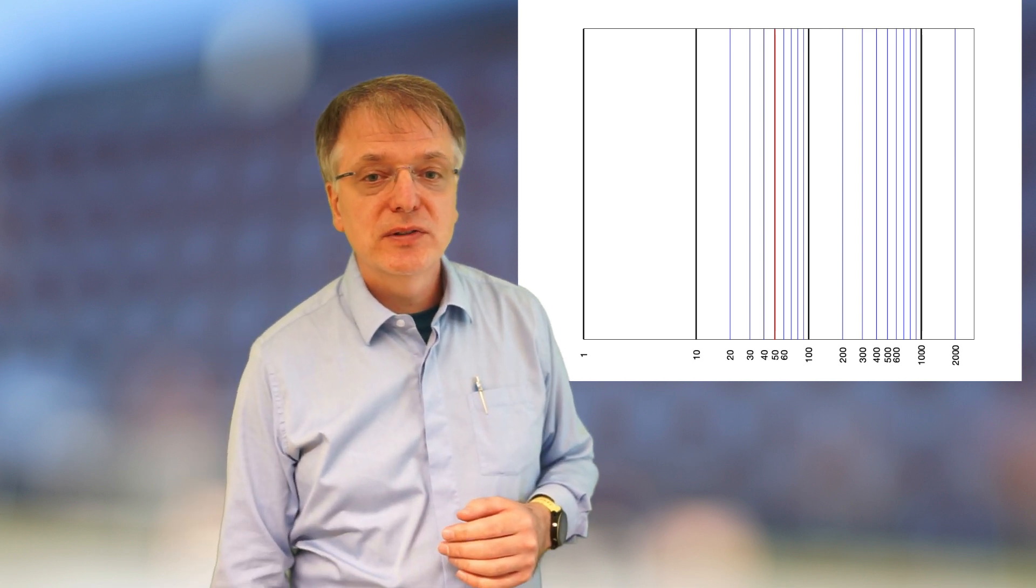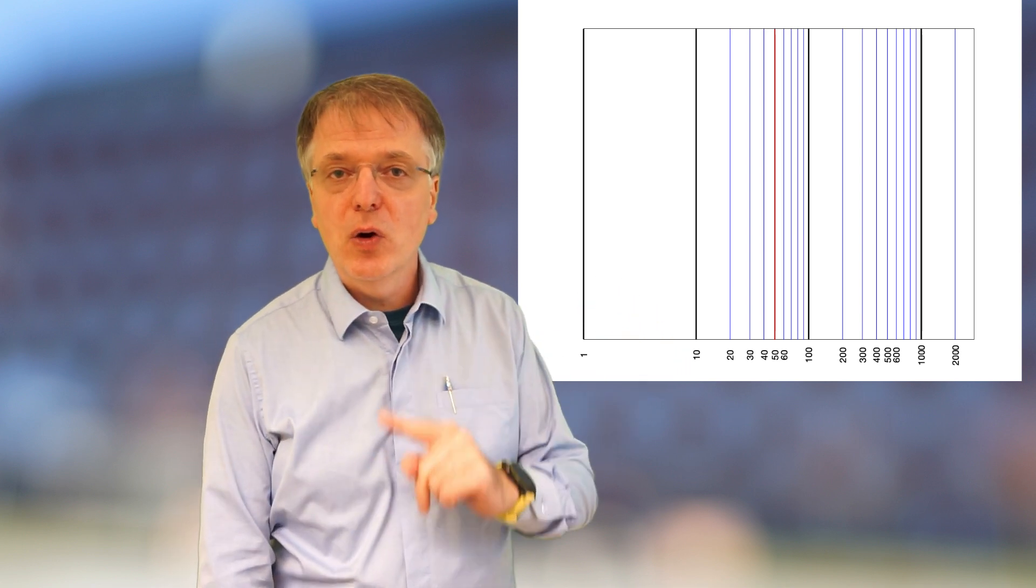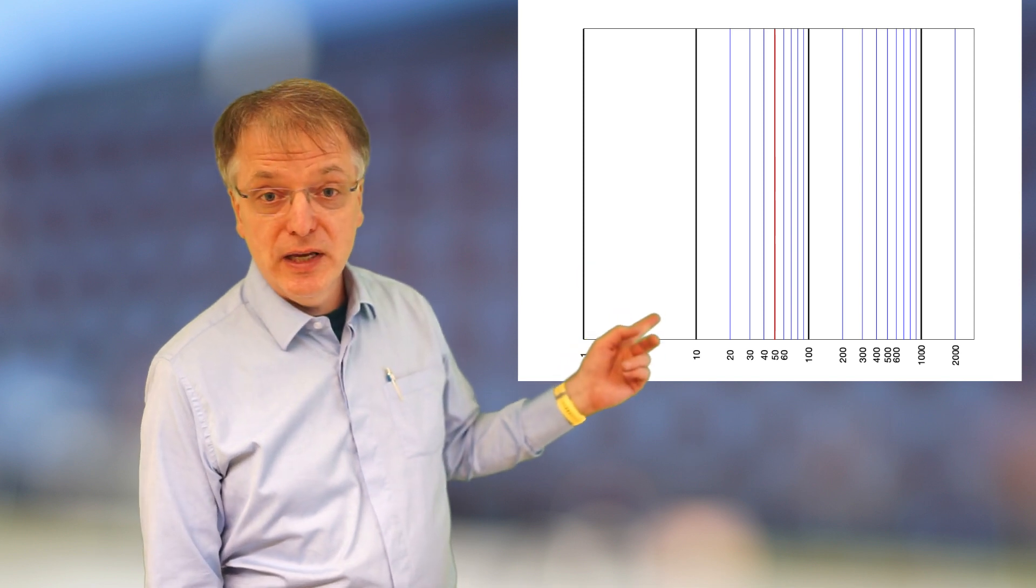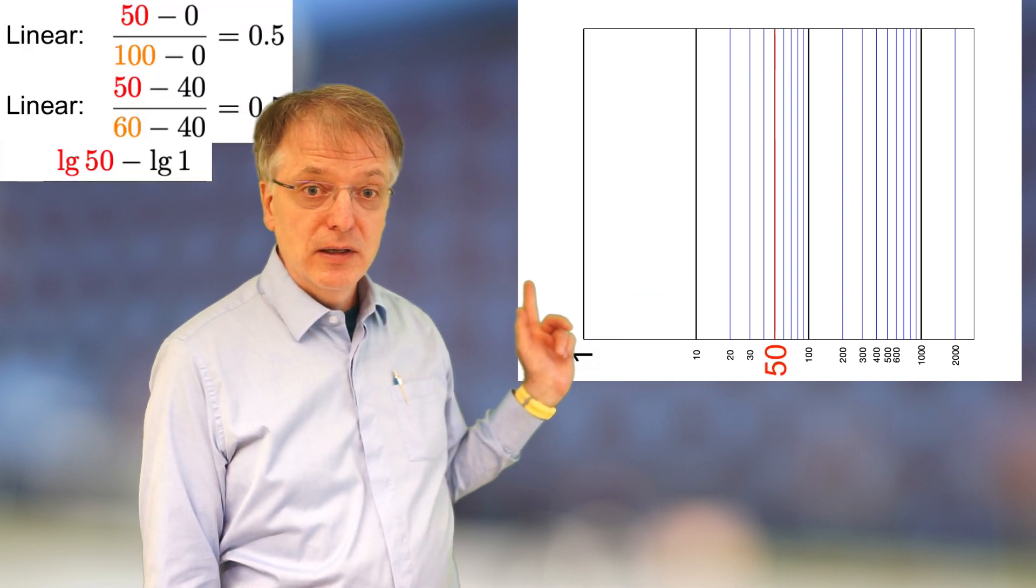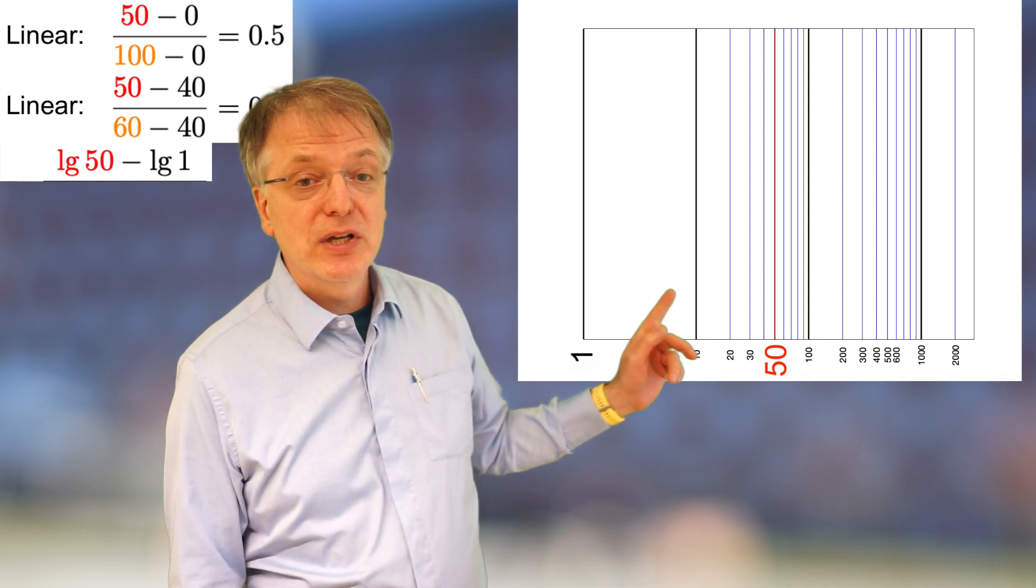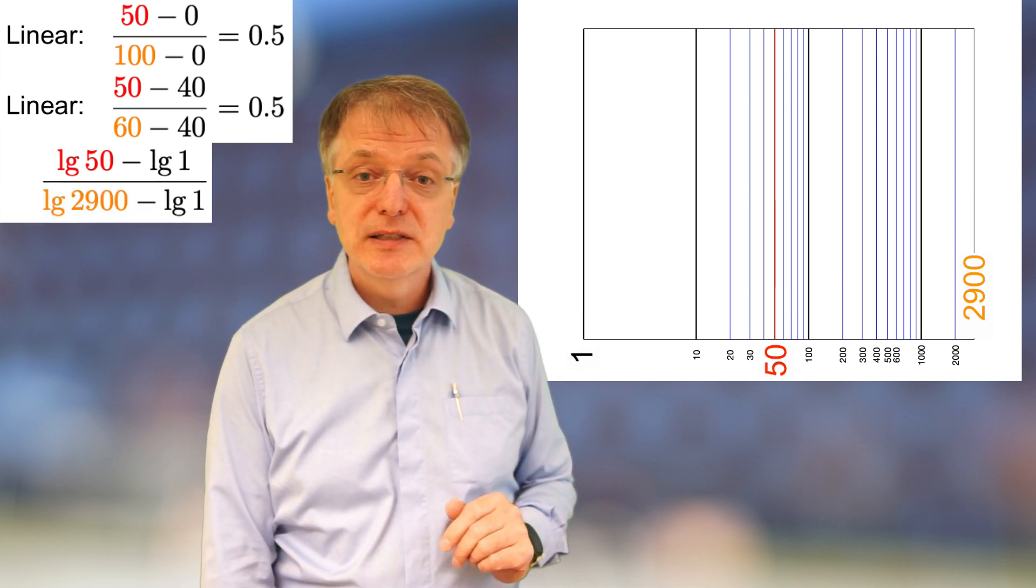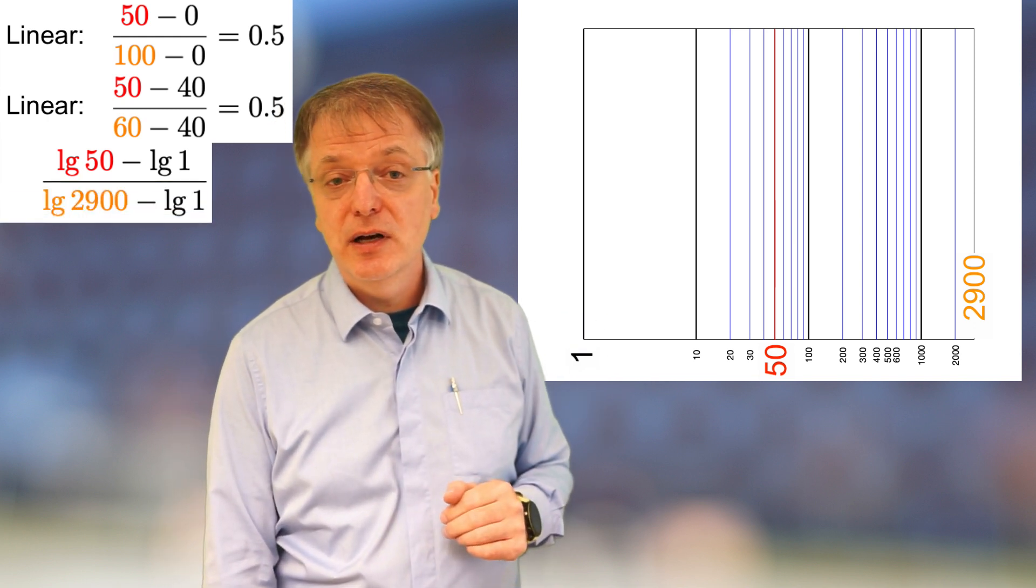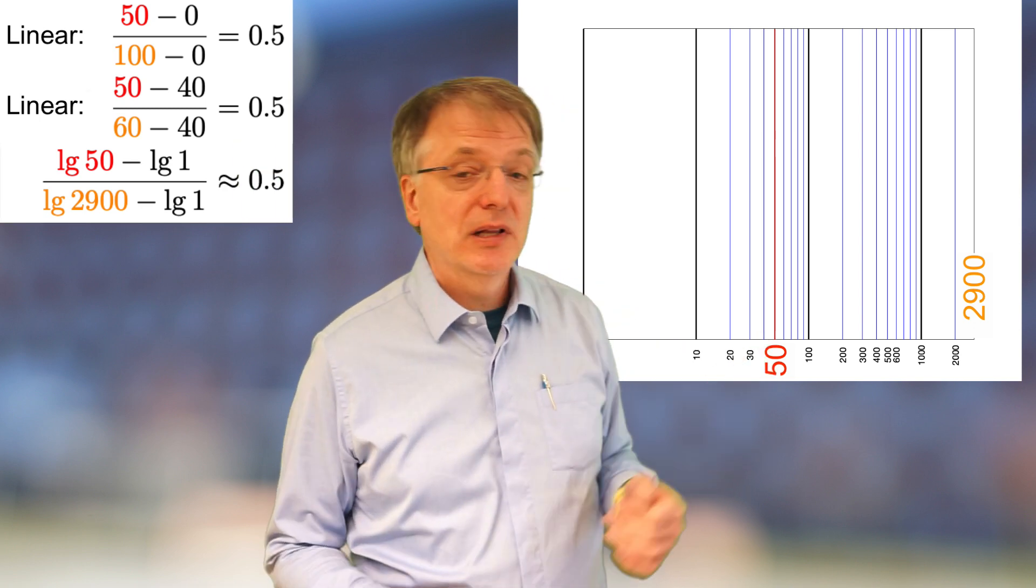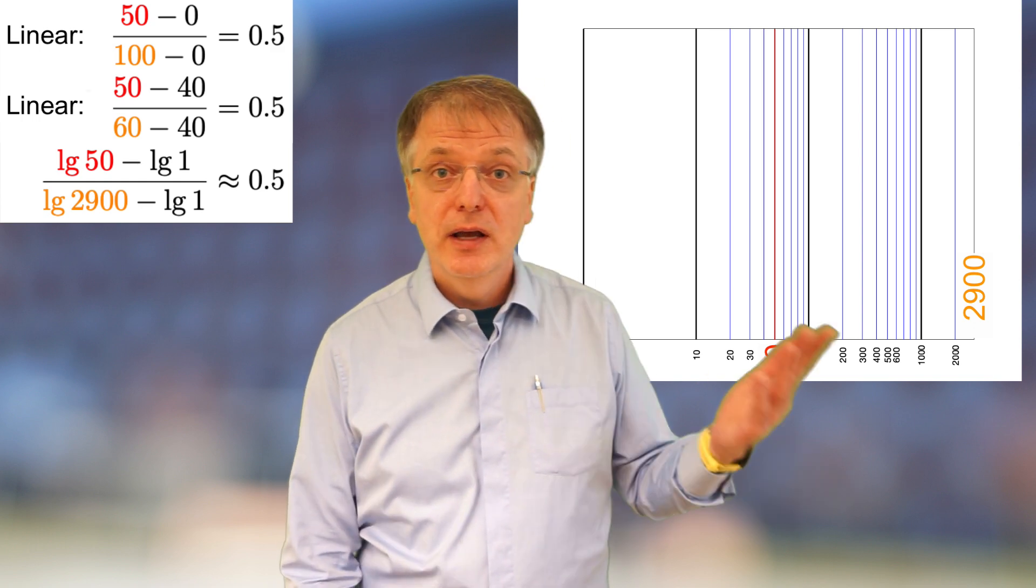So why is 50 in the middle here? Well, that's because the distance between values is proportional to the difference of the logarithm of these values. So log 10 of 50 minus log 10 of 1 is proportional to the distance between 50 and 1. If we divide these two differences, we get approximately 50%. So hence 50 is in the middle of 1 and 2900.